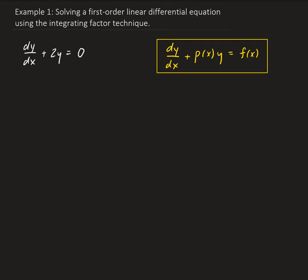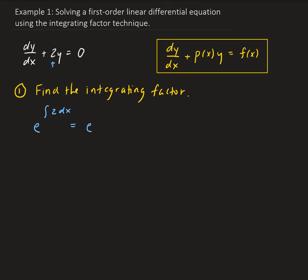So let's start. The first step is to determine the integrating factor. To get the integrating factor, we are going to take e to the power of the integral of p. In this case, p of x is 2, and we are going to integrate this with respect to x. This gives us e to the power of 2x.